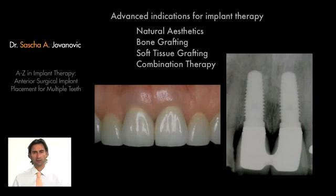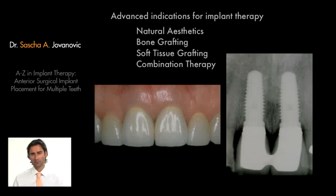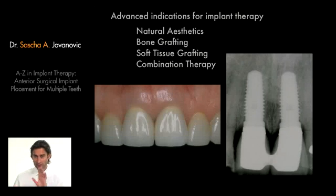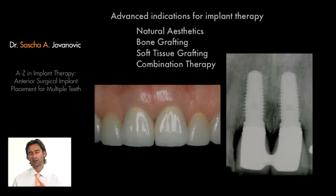One very important area to consider when thinking about anterior implant placement for multiple teeth is that we very often need advanced indications. We're looking for anterior implant placement, which usually means aesthetics. We're looking for optimal contour because with multiple teeth we need some tissue replacement, so we're looking at grafting. And often we also need some soft tissue management. These parts are similar to single teeth but even more critical for multiple teeth, because as soon as multiple teeth are missing, more bone and more soft tissue is lost.